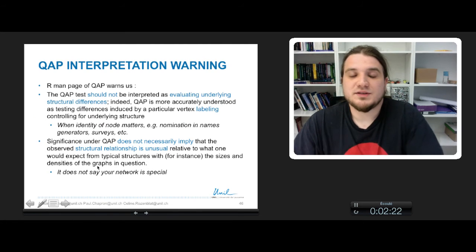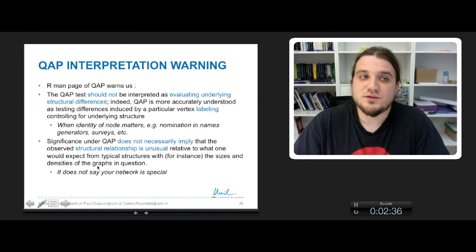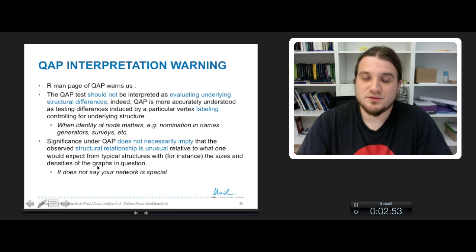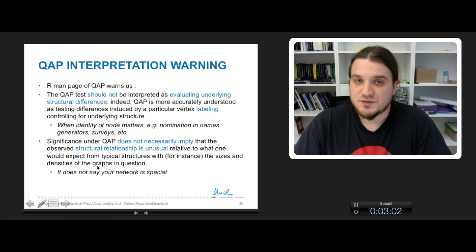And finally there is a warning in the manual page of the function QAP that warns us that the QAP test should not be interpreted as evaluating underlying structural differences and that QAP is more accurately understood as testing difference induced by a particular vertex labeling, which is controlling for underlying structures. So basically, QAP test has been designed for the cases where the identity of the nodes matters. For example, when actors say who are the other actors with which they interact. For example, the nomination process in names generator surveys and so on.